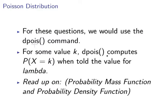So if for some value k, dpois computes the probability of X equal to k when told the value for lambda. And there's other commands called ppois that would have fulfilled a different function. And just to read up a bit more on this you could read up on the probability mass function and probability density function which is what the dpois command is related to.